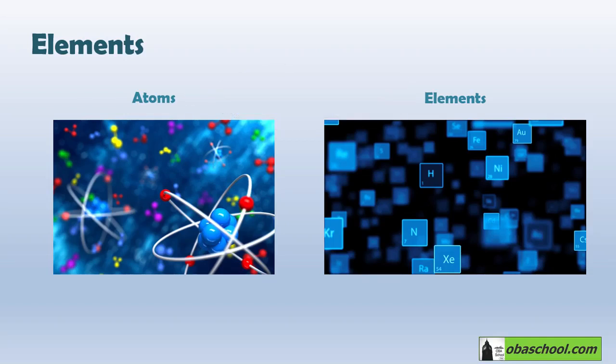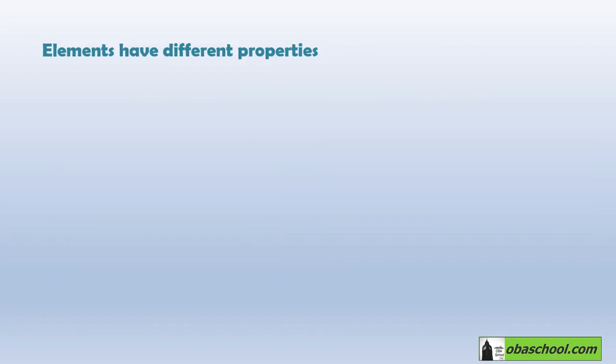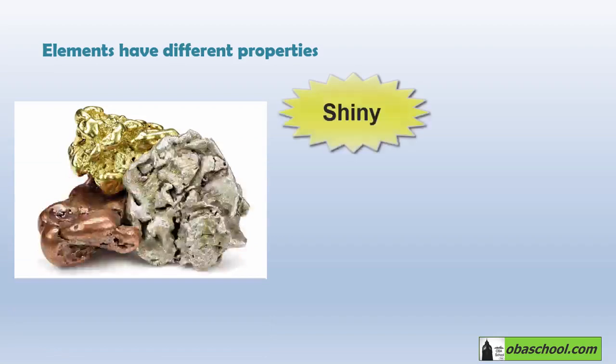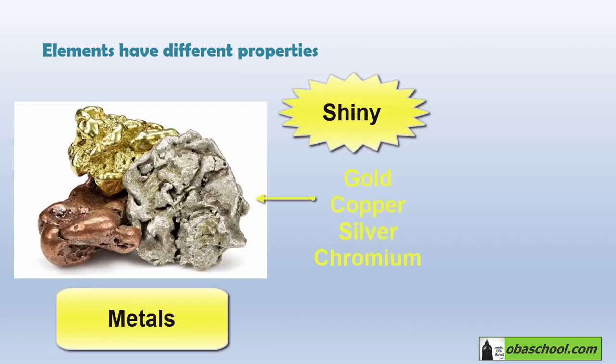These 100 elements are not the same. Actually, they have different properties. For example, some elements are shiny solid metals such as gold, copper, silver, chromium, and others,